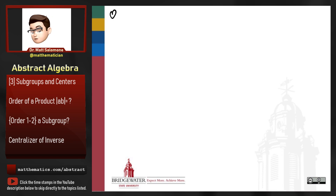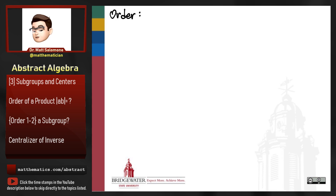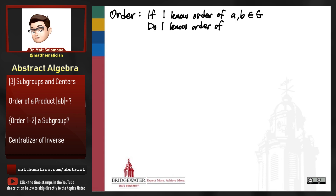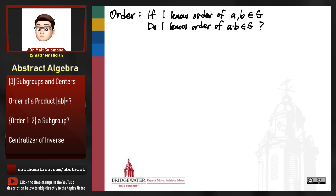The first thing I want to do is talk again about order, because order is such an important concept in our course this semester — it's one of the most powerful tools we have for differentiating between groups. The question I want to pick up is: if I know the order of a pair of elements a and b in a group, is there a way to know the order of their product a times b? How does the order of a product relate to the orders of the factors?